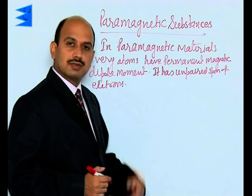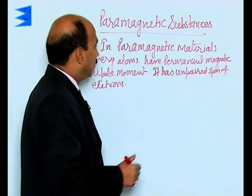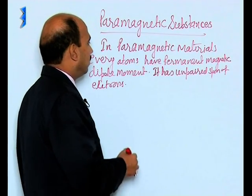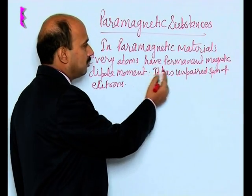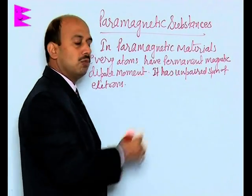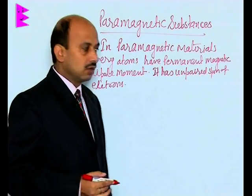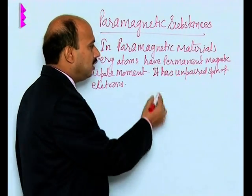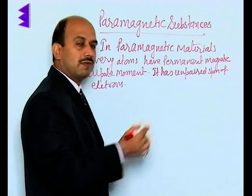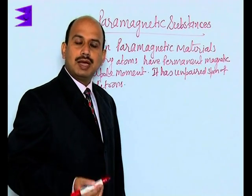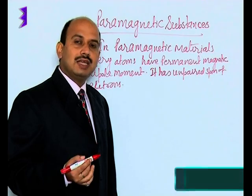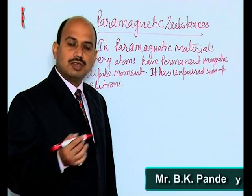In paramagnetic materials, every atom has a permanent magnetic dipole moment because of unpaired spin of electrons. So the net magnetic dipole moment of each atom is not zero.